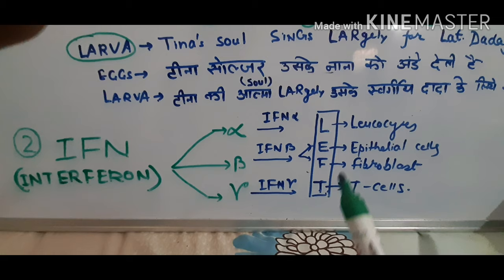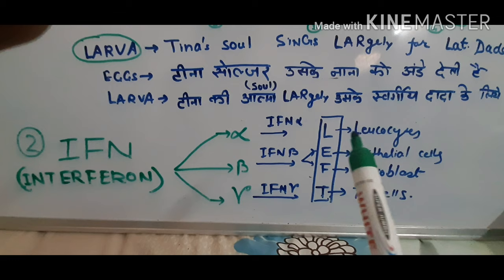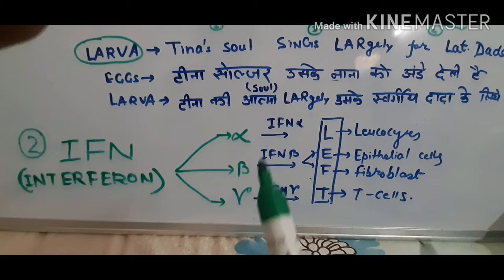To remember this, use the mnemonic 'LEFT': L for leukocytes — interferon alpha; E and F for epithelial cells and fibroblasts — interferon beta; T for T cells — interferon gamma. So interferon alpha, beta, gamma — LEFT. L is leukocyte for alpha, E and F are epithelial cells and fibroblasts for beta, and T cells for gamma.